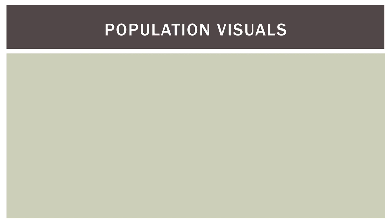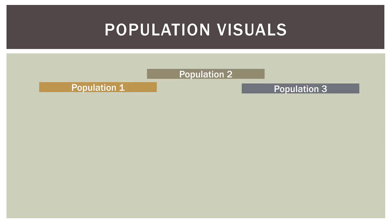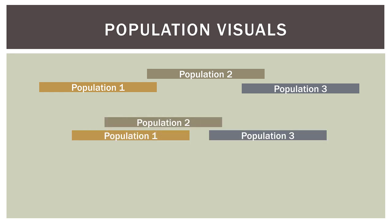Let's visualize what we're talking about here. In this first case, we have three populations that do not overlap much at all. Population one is far to the left, population two is near the center, and population three is over to the right. So in this case, we would probably conclude that these three populations are not equal. In the second case, population one and population two overlap quite a bit while population three is by itself off to the right. Again, we would conclude that these three populations are not the same.